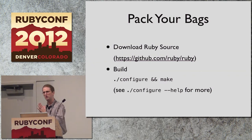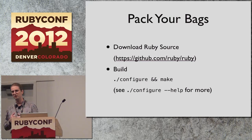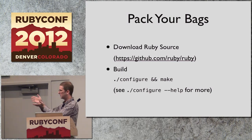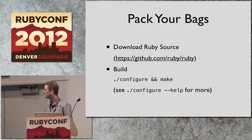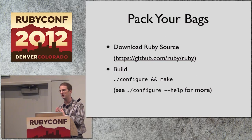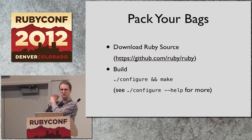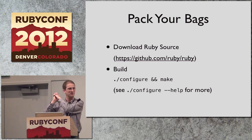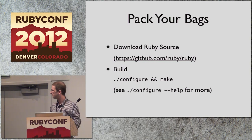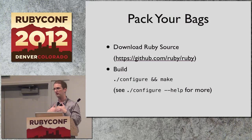Before we set off on this adventure, we need to pack our bags. If you're going to debug Ruby, you need Ruby — go get the source code. Conveniently, it's mirrored to GitHub, so it's really easy to get now. Go ahead and build it. Over the years, building Ruby has become incredibly easy — you don't even need the configure step anymore; just type make and it'll run configure for you. If you want to play around with build settings, configure --help has a lot of information.